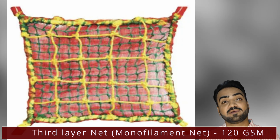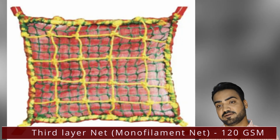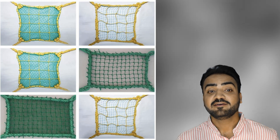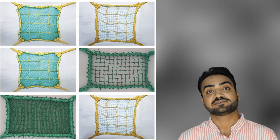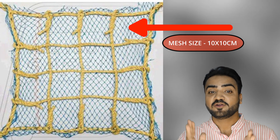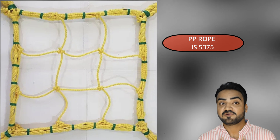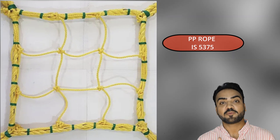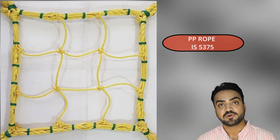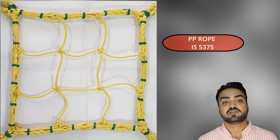The third layer is called the monofilament net. It must be a UV-stabilized net with welding, grinding, or splatter resistance of 120 GSM. The net shall be made with a square or diamond mesh, and the length of the mesh side shall not be greater than 10 centimeters.